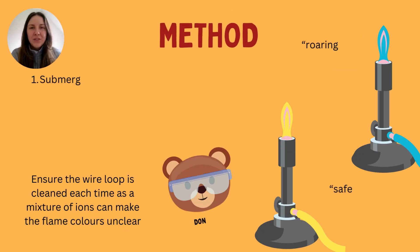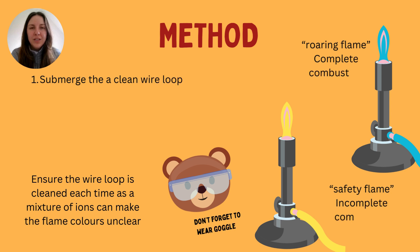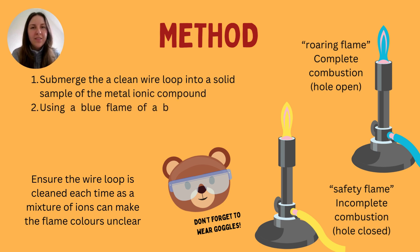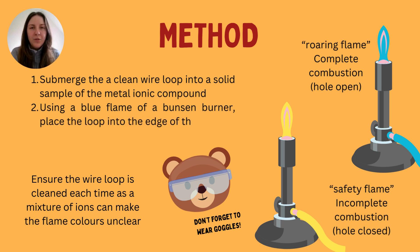We can test for different metal ions using a flame test, and you'll need to use a Bunsen burner for this. Make sure that you're standing up when you do this experiment, you're wearing goggles, hair is tied back, and any clothing that is loose or flowy is clearly away and tied away from you so it won't get near the flame.